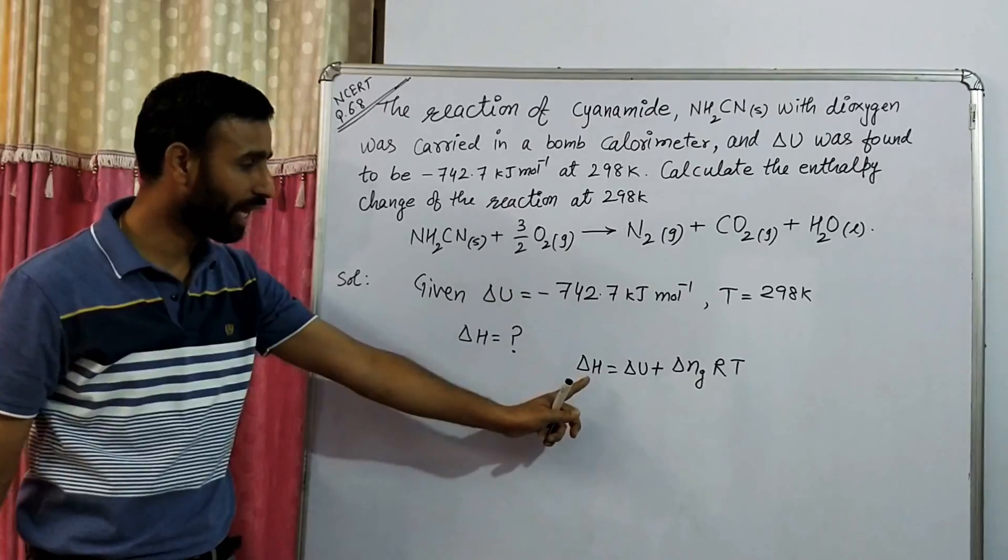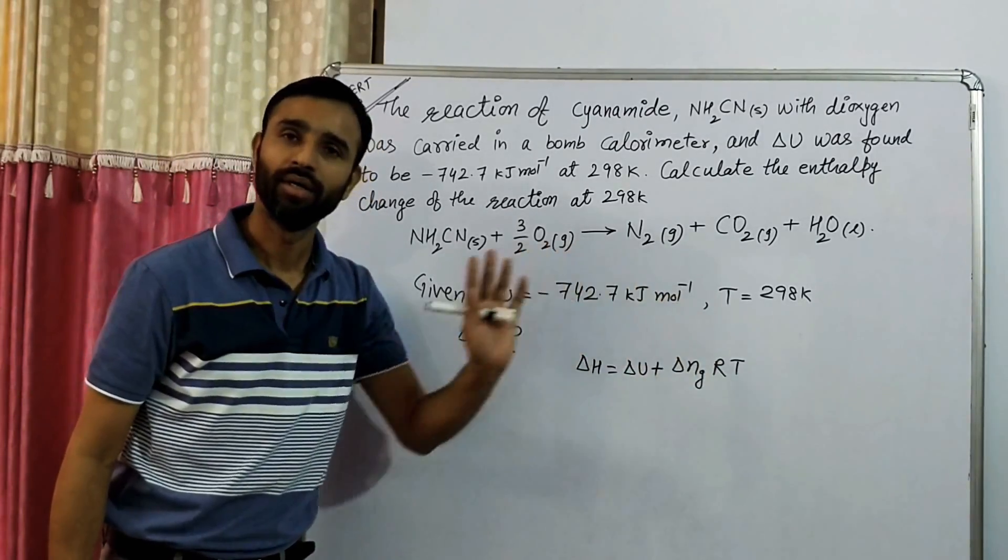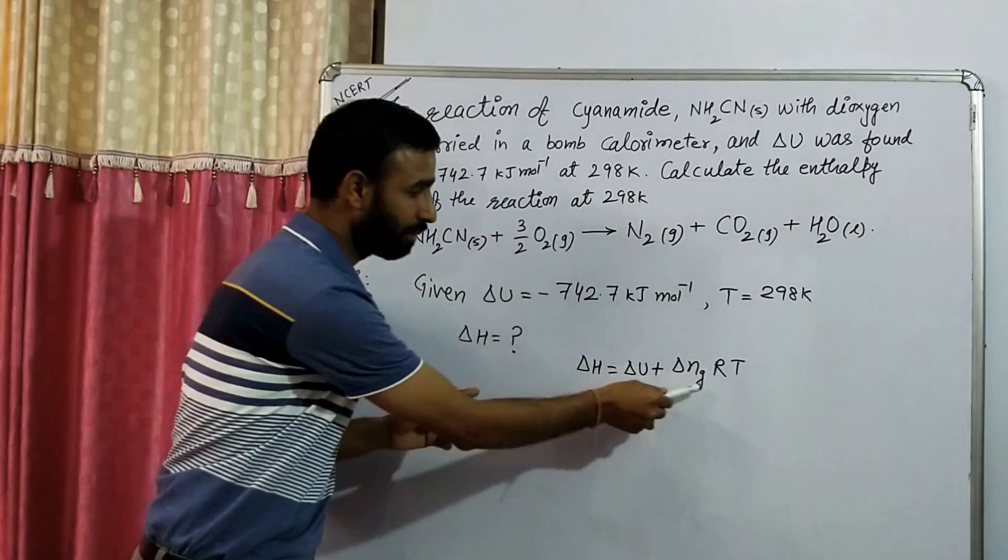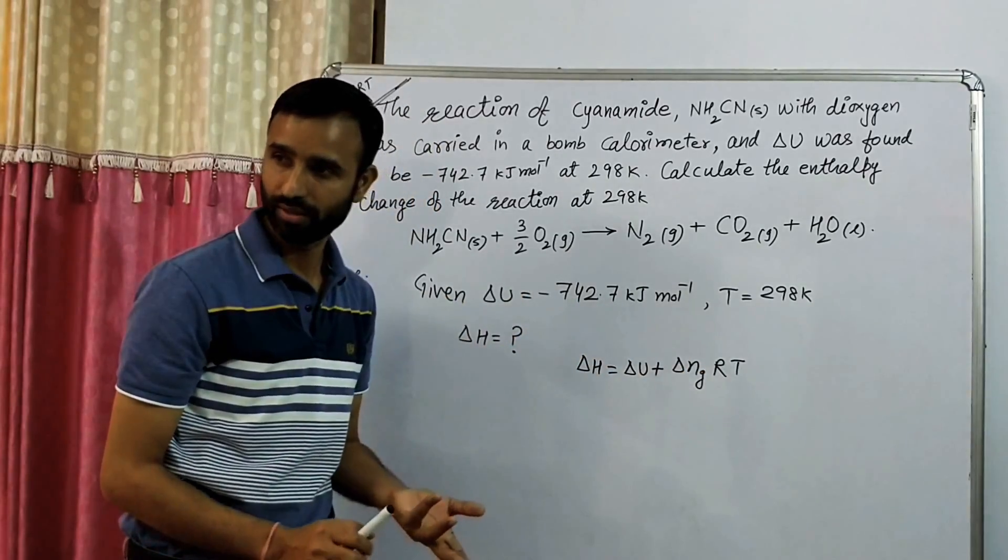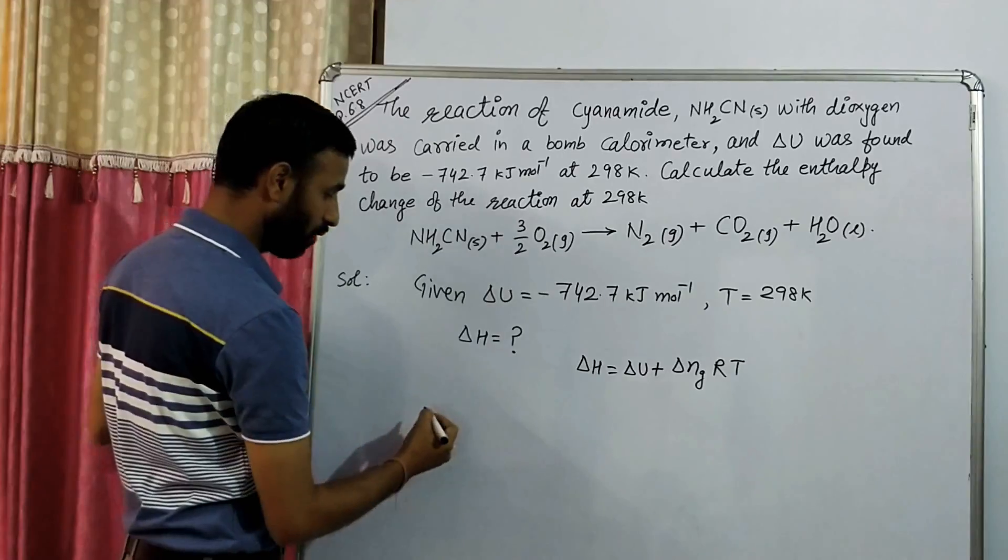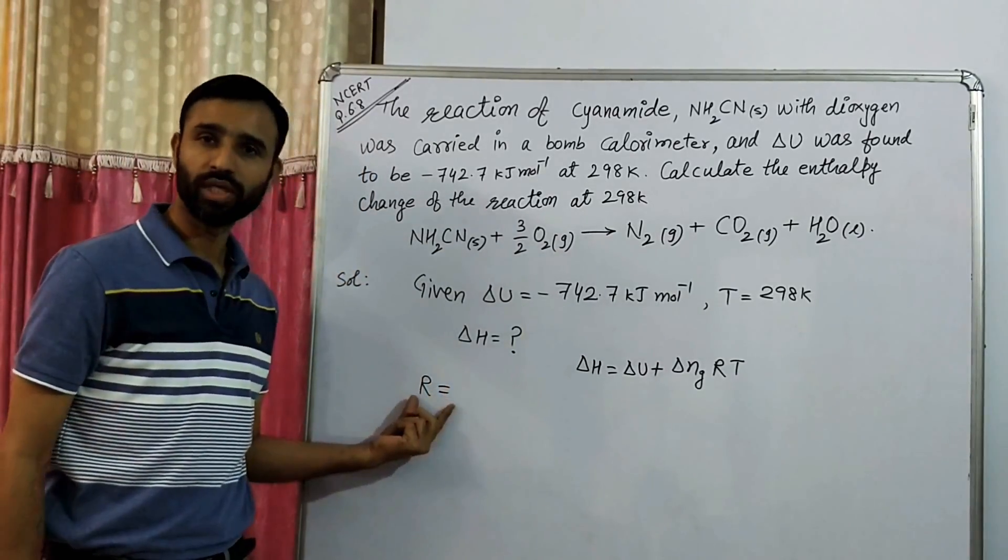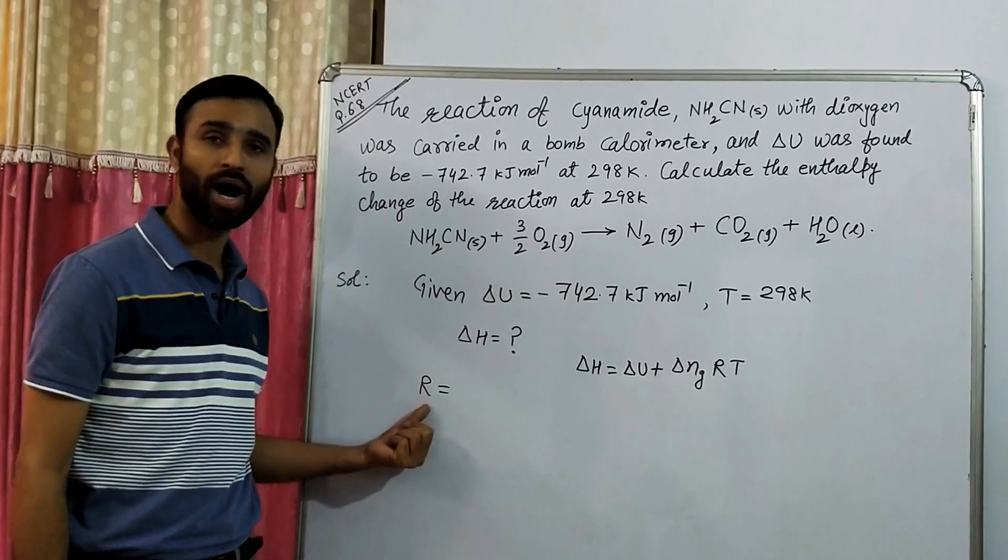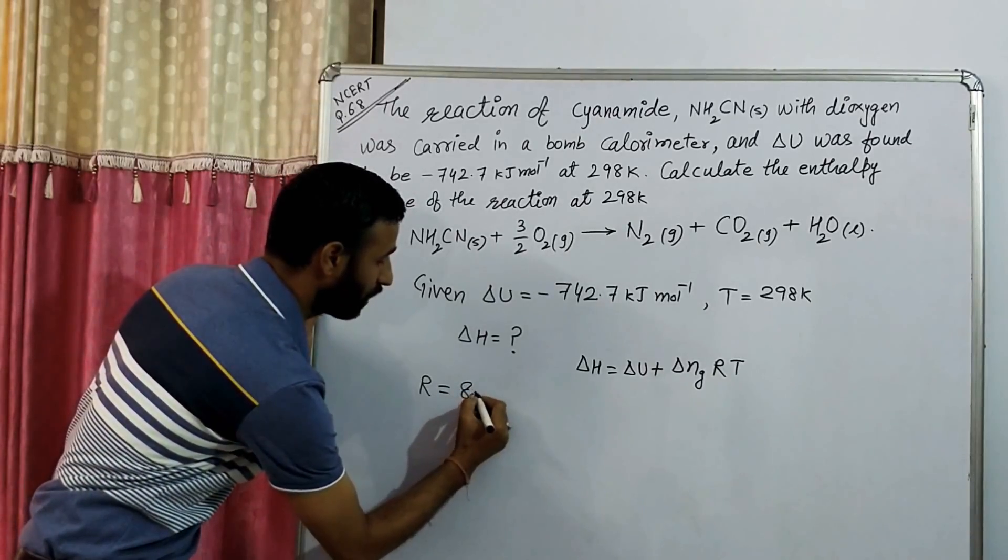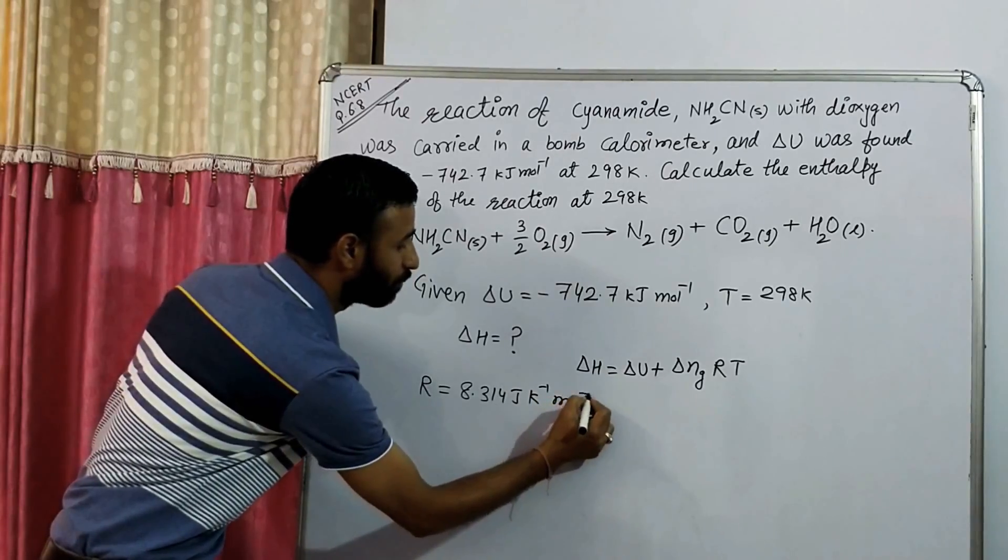So we just write, we know that delta H is equal to delta U plus delta Ng RT. Out of this, delta U we have, temperature we have, R is a constant and it is in joules or kilojoules. So the value of R that we have to use—students are confused in this, which value of R is used—so keep in mind, if it is in joules, we have this value: 8.314 joules per Kelvin per mole.